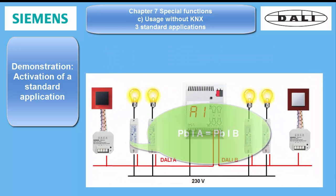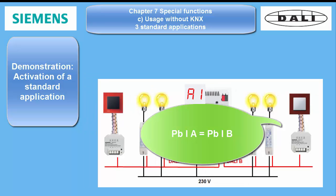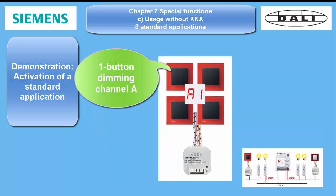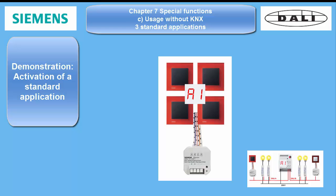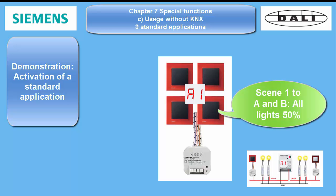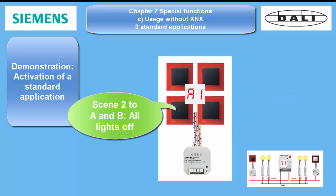The presets for A1 are as follows — both pushbutton interfaces are identical: Button A = one-button dimming channel A; Button B = one-button dimming channel B; Button C = Scene 1, all lights to 50%; Button D = Scene 2, all lights off.